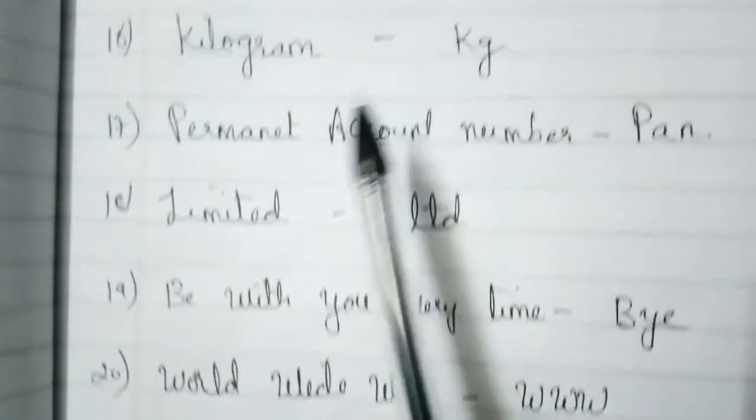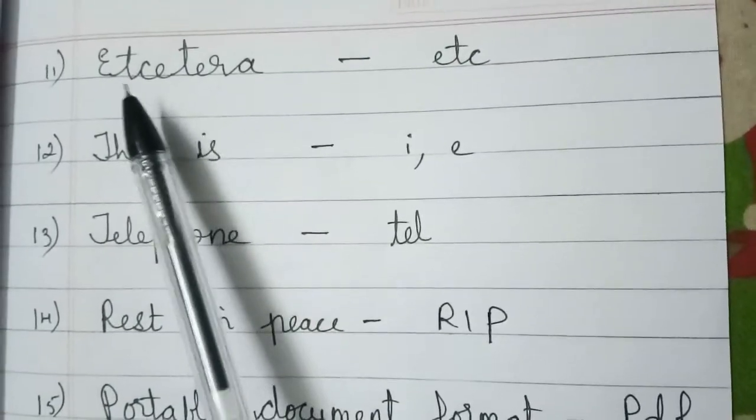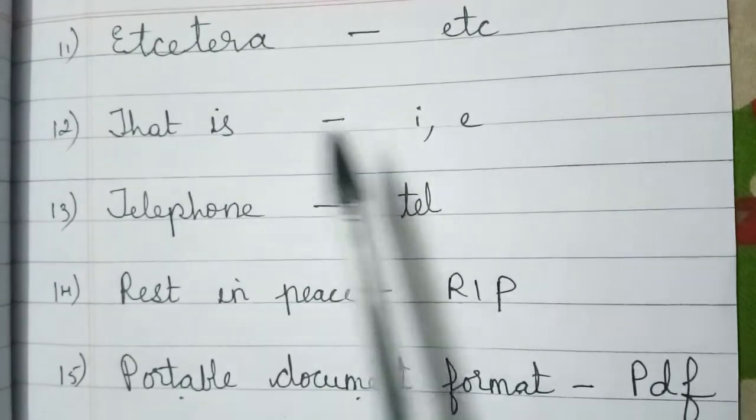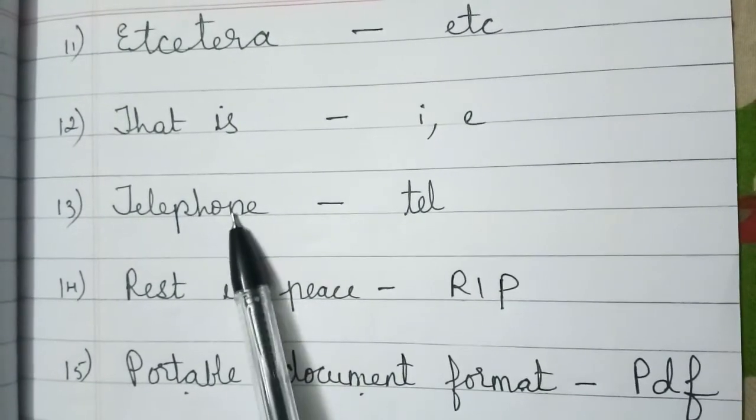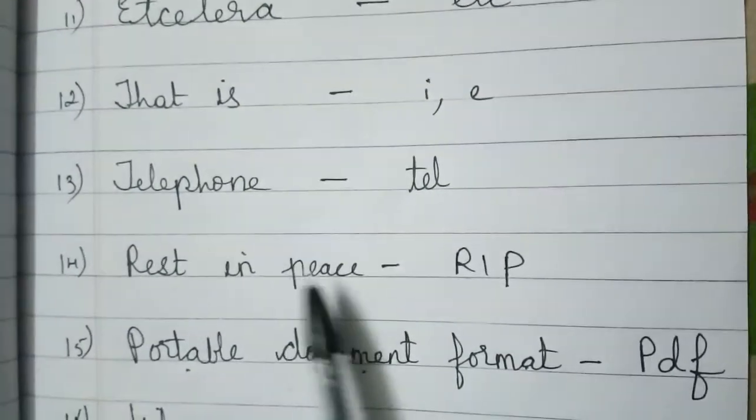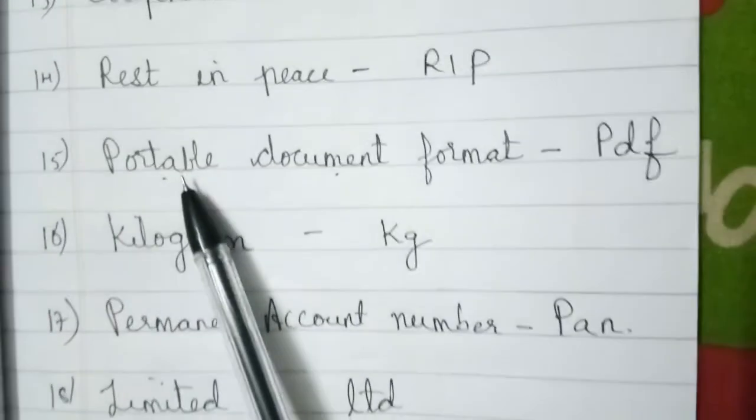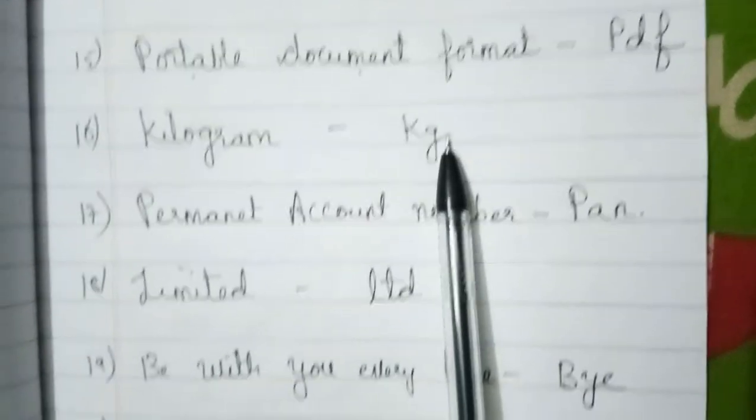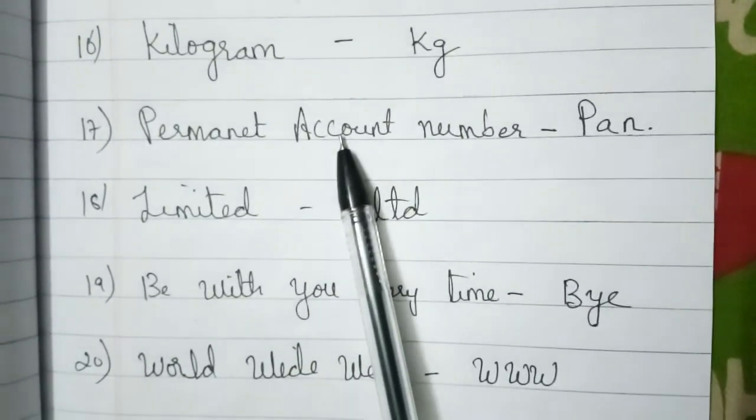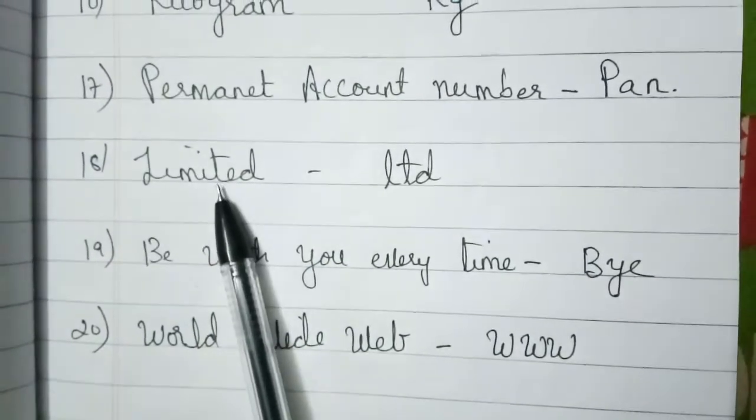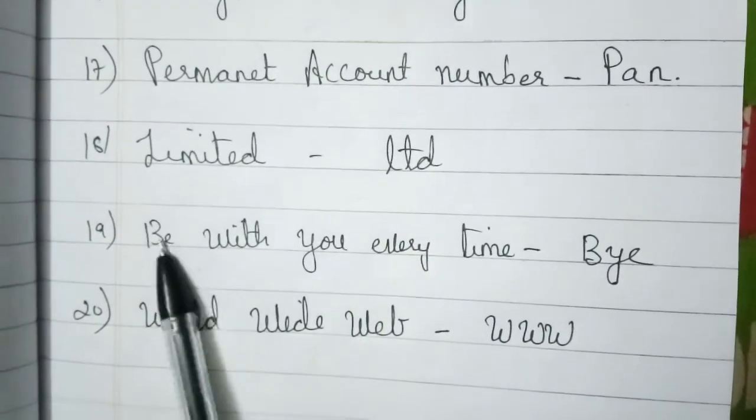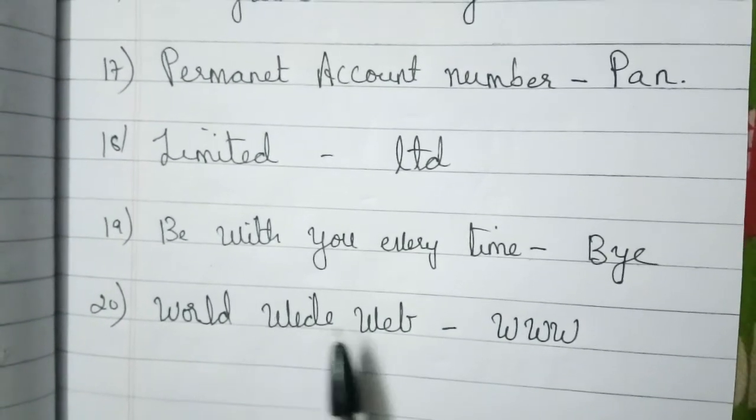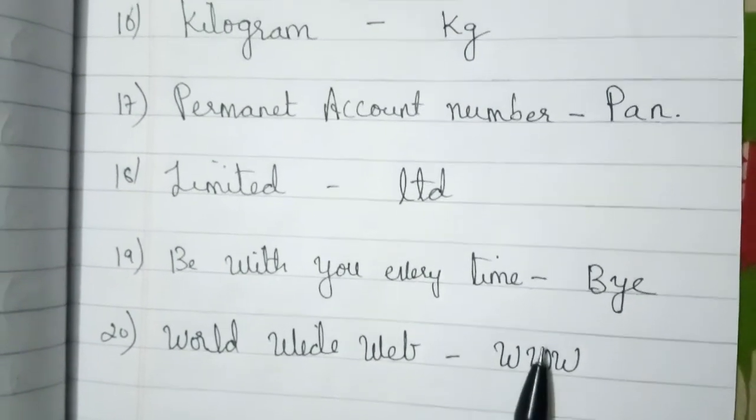Children, I will read again once. See properly, listen. Etc, E-T-C. That is, I.E. Telephone, T-E-L. Rest in peace, R-I-P. Portable document format, P-D-F. Kilogram, K-G. Permanent account number Pan, P-A-N. Limited, Ltd. Be with you every time, Bye. World Wide Web means W-W-W.